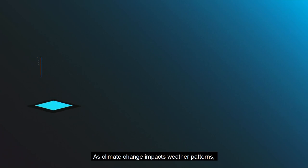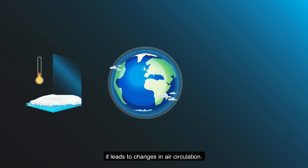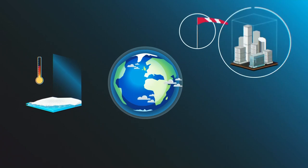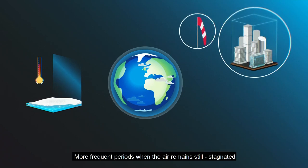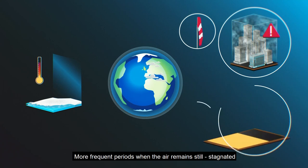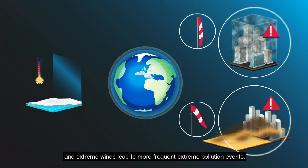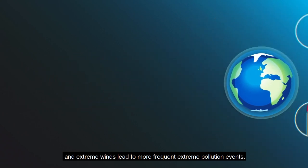As climate change impacts weather patterns, it leads to changes in air circulation. More frequent periods where the air remains still, stagnated, and extreme winds lead to more frequent extreme pollution events.